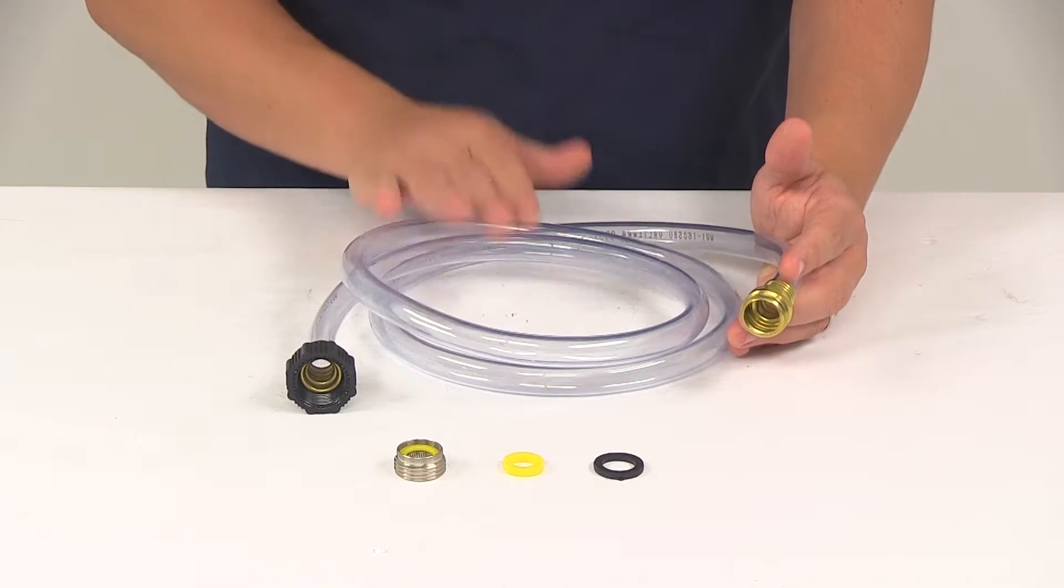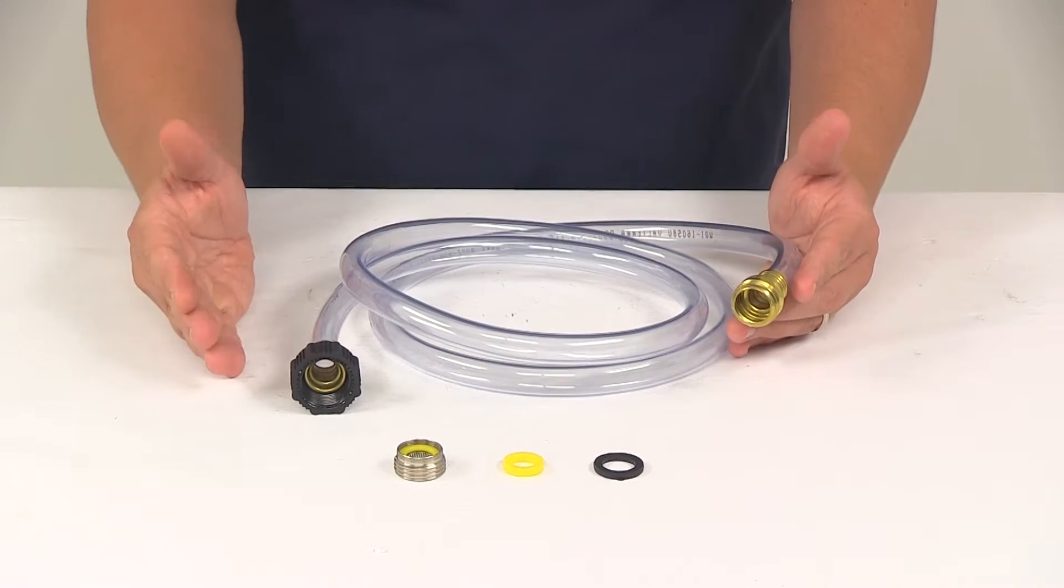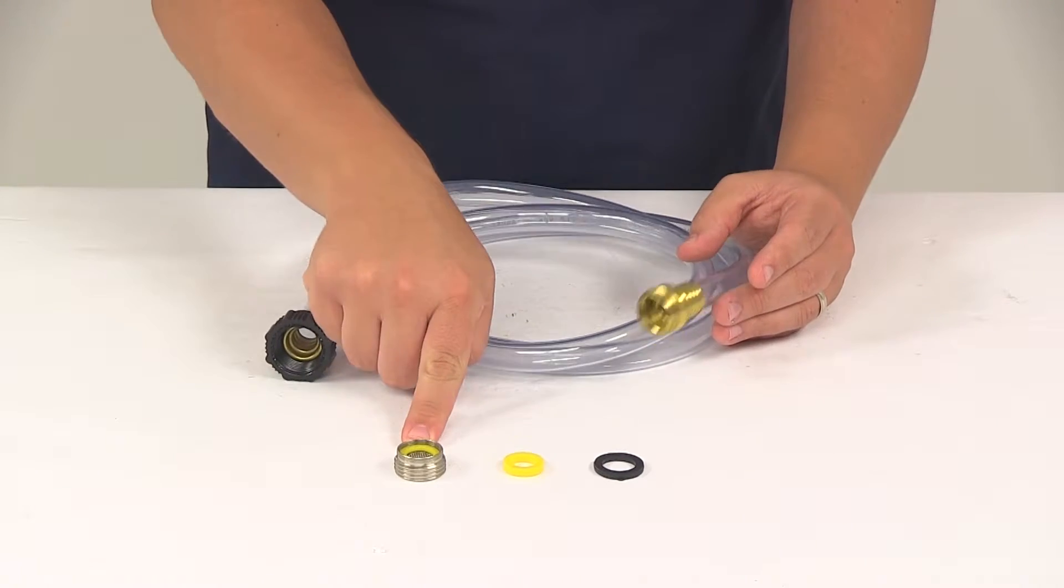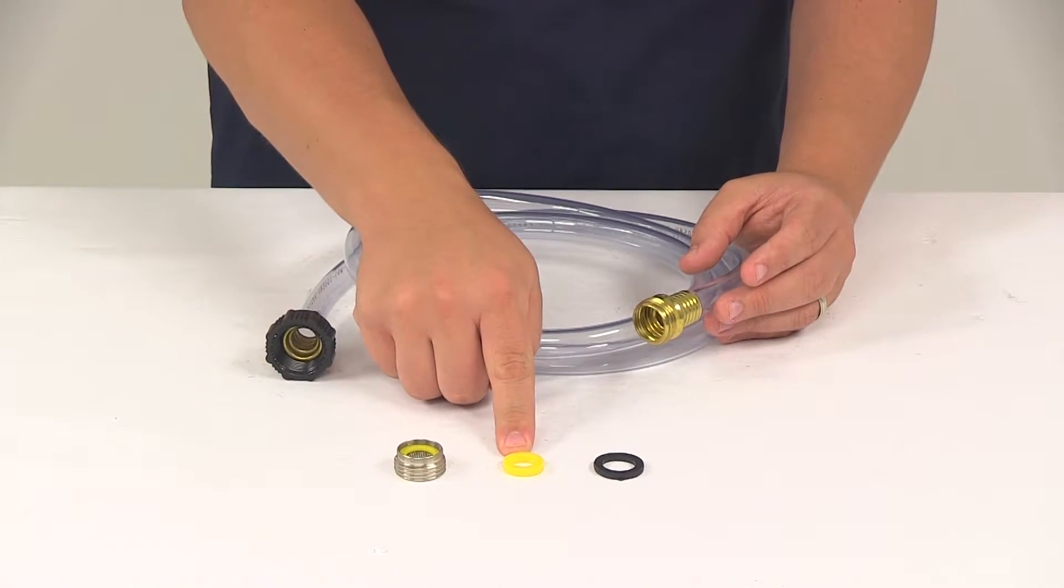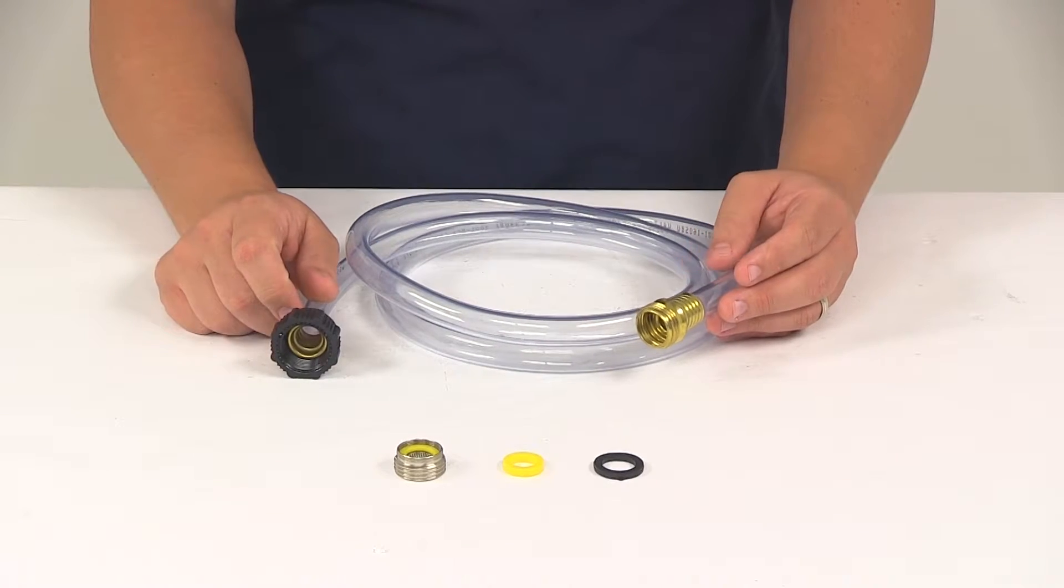The kit's going to come with a half inch diameter hose. This is going to measure six feet long and it's also going to come with a universal faucet to hose adapter. That way it can work with your bathroom faucet.